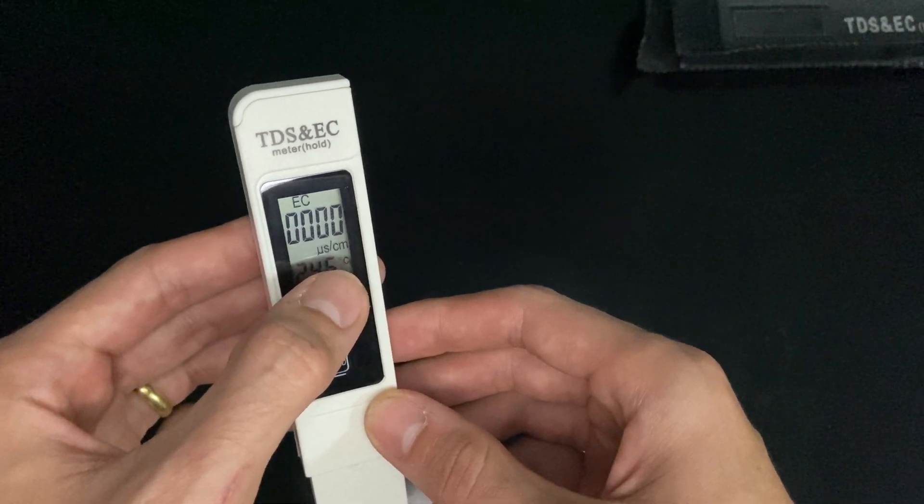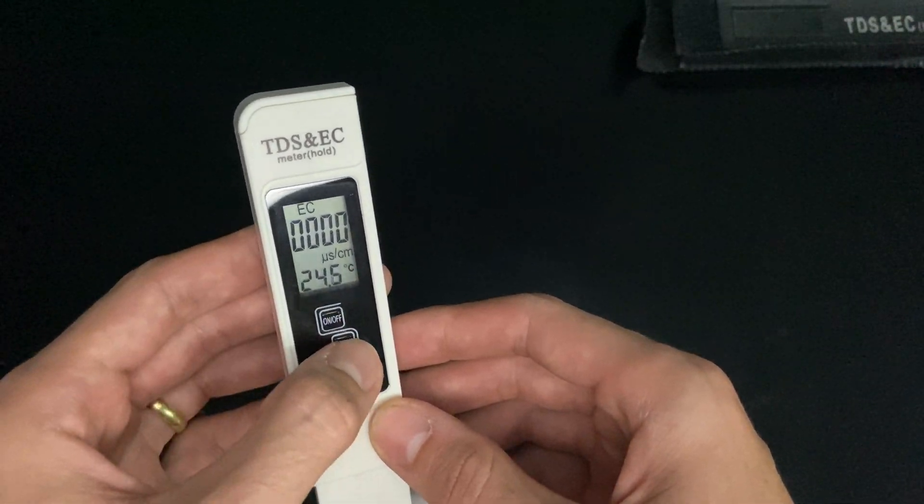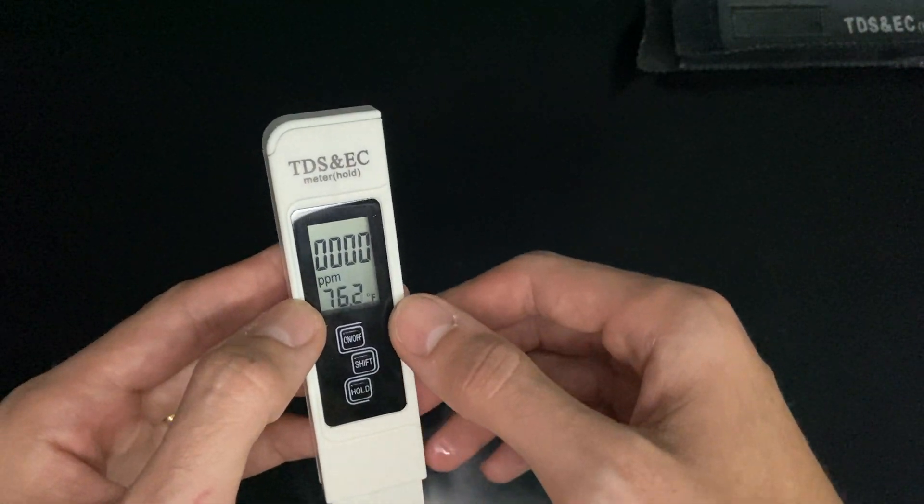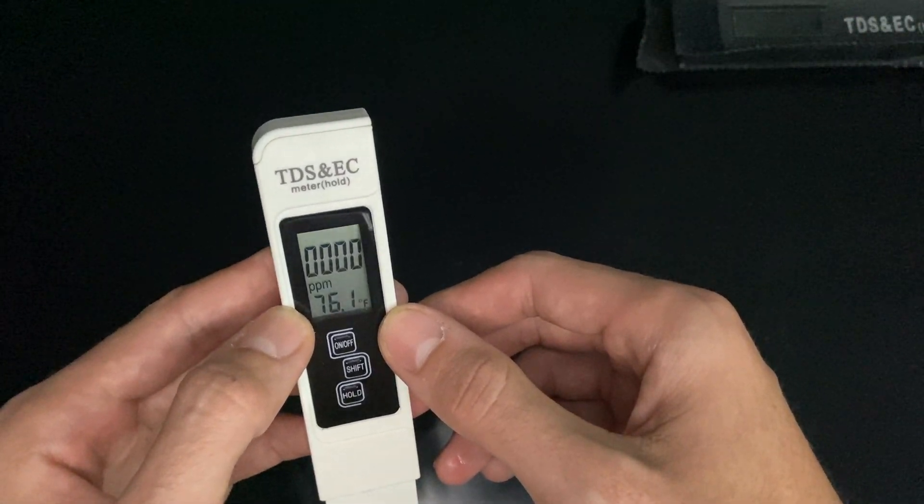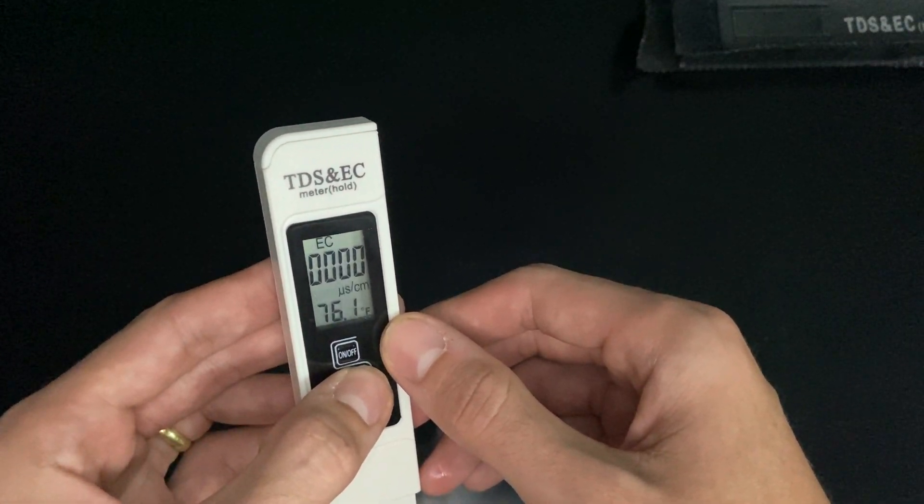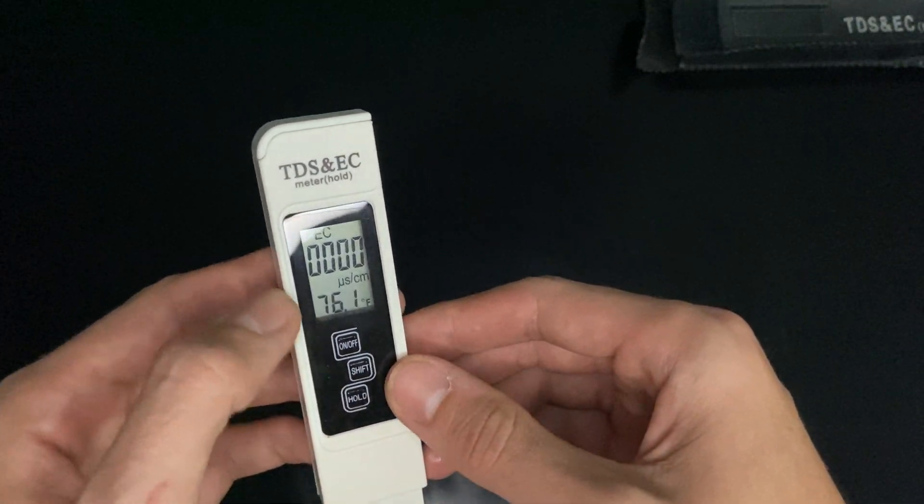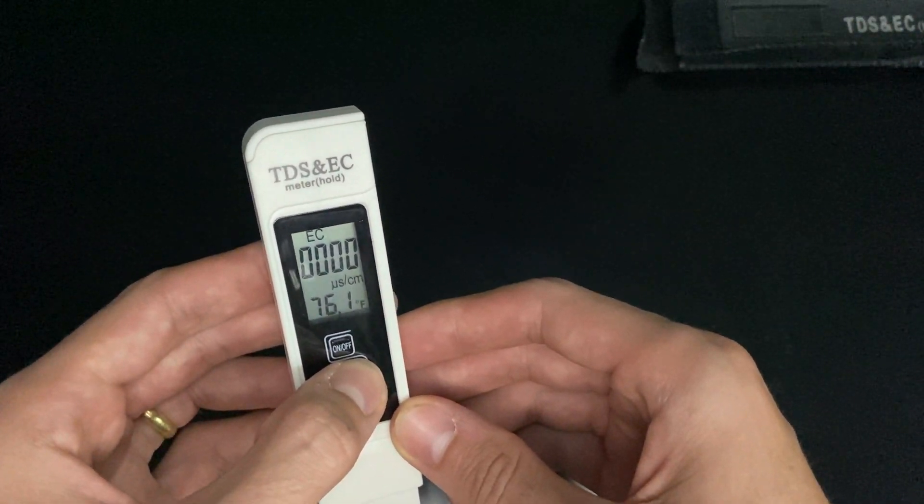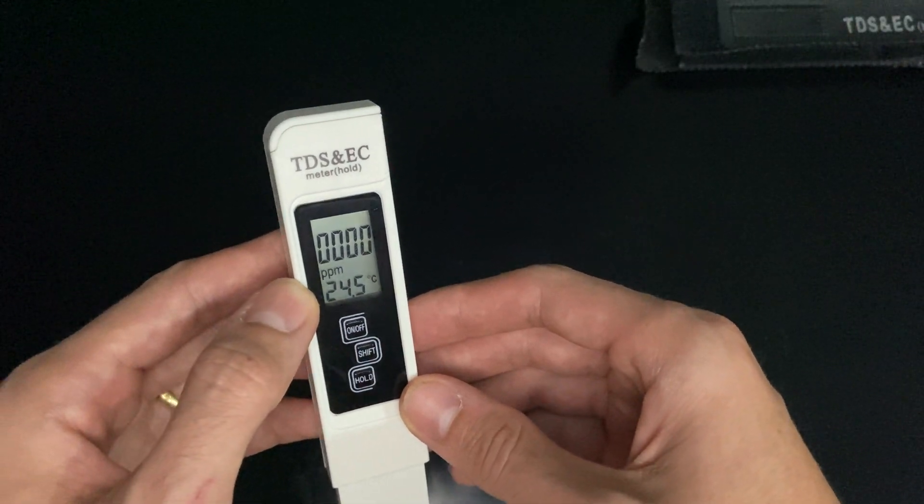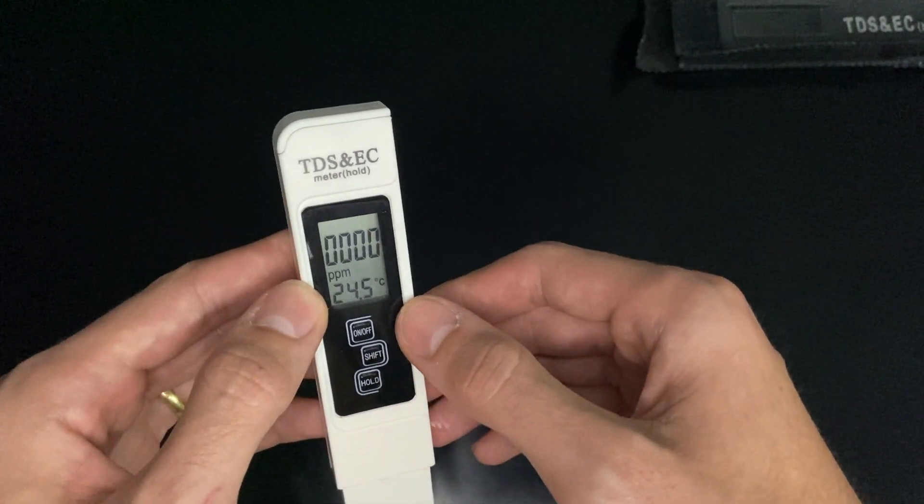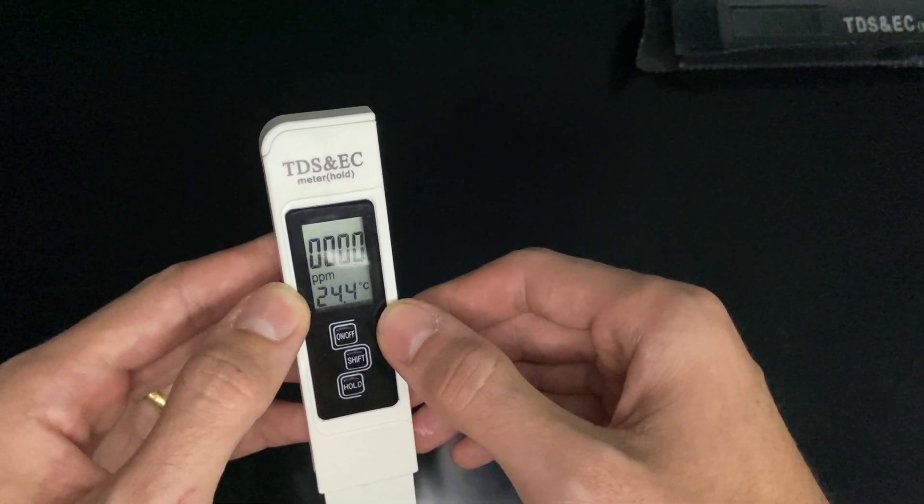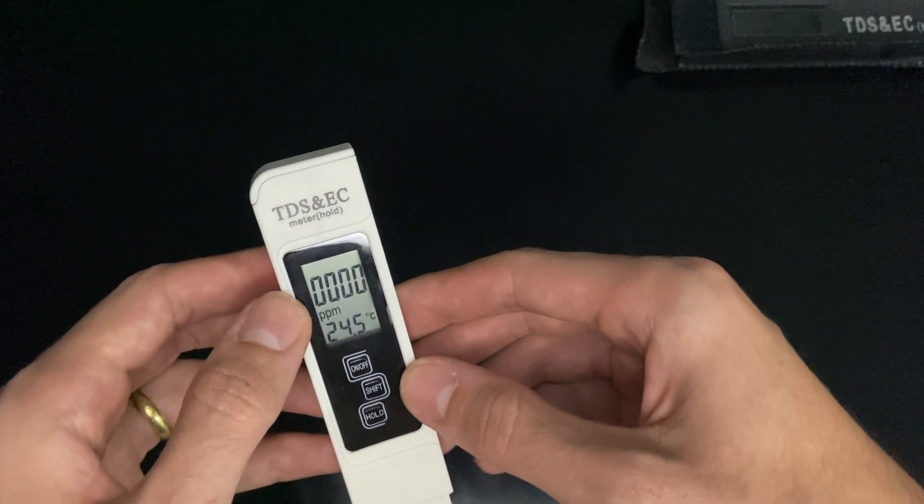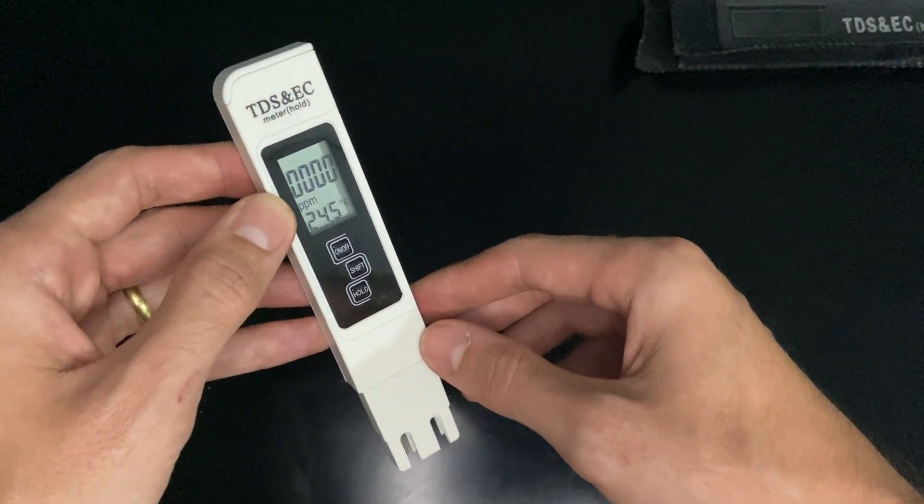If we press shift again, we can get the temperature in Fahrenheit and the electricity in the water. As I'm located in Brazil, I use degrees Celsius. How does it work? When you put this instrument inside the water, it shows you a value.